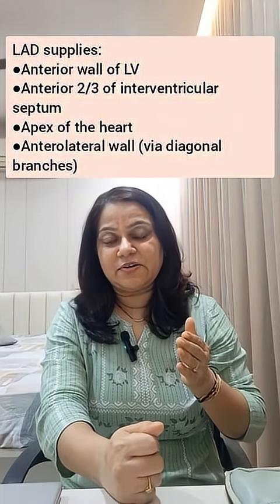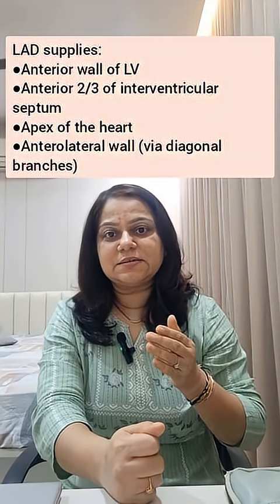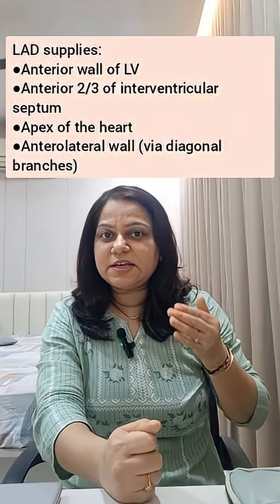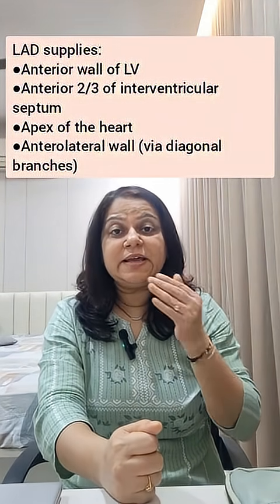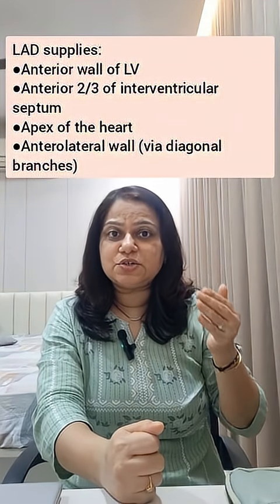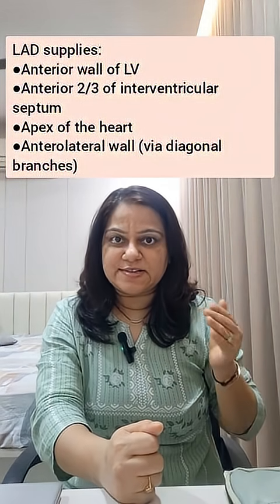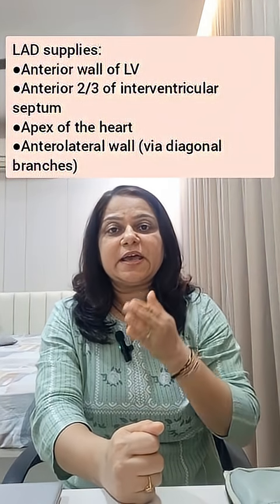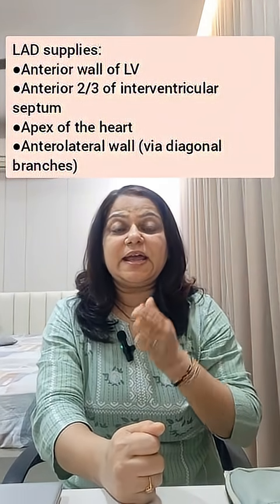The left anterior descending branch of the left coronary artery supplies the anterior wall of the left ventricle, the anterior two-thirds of the interventricular septum, and the apex of the heart.